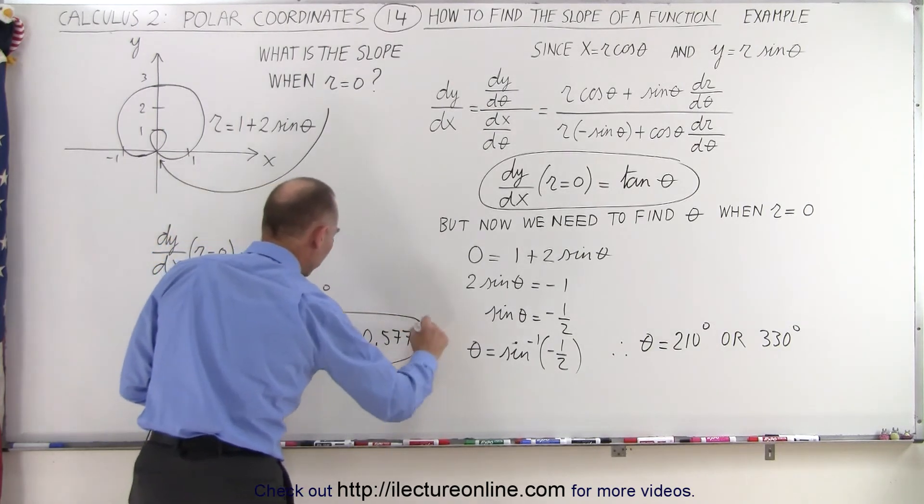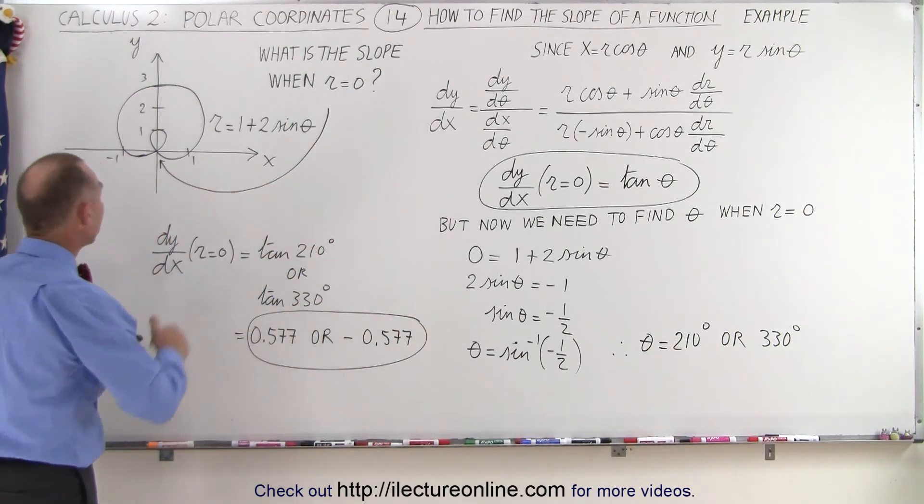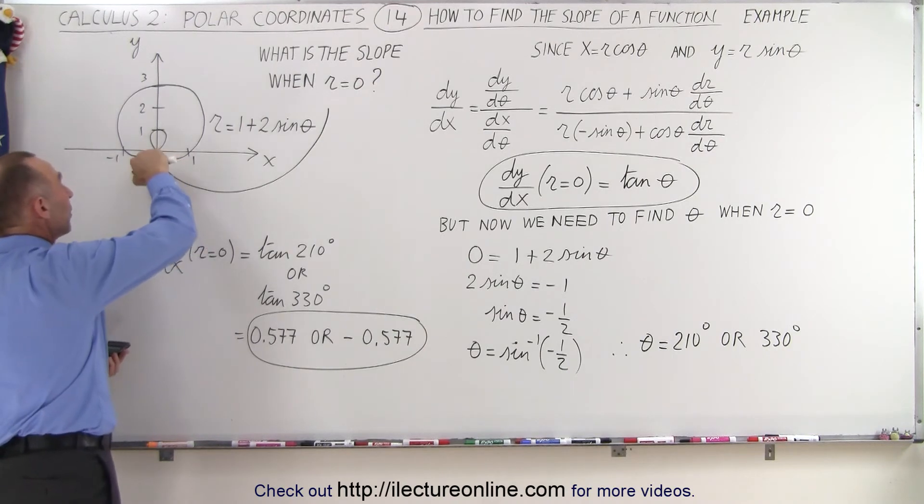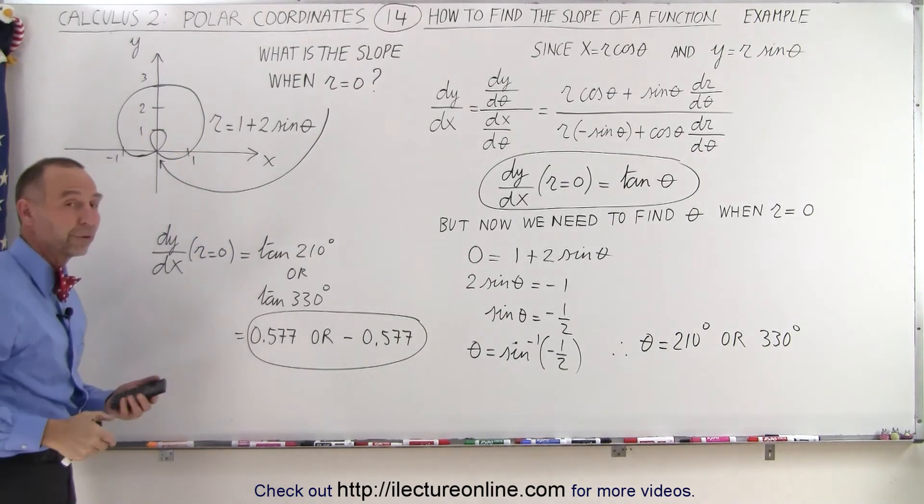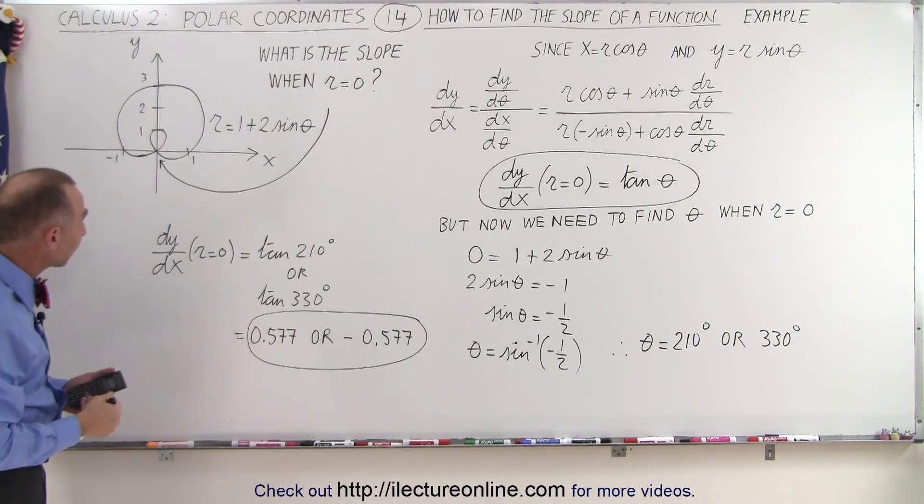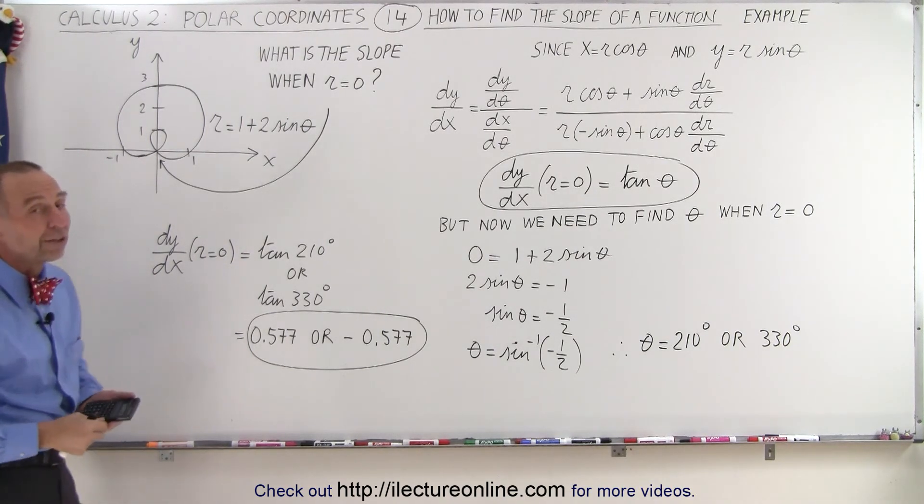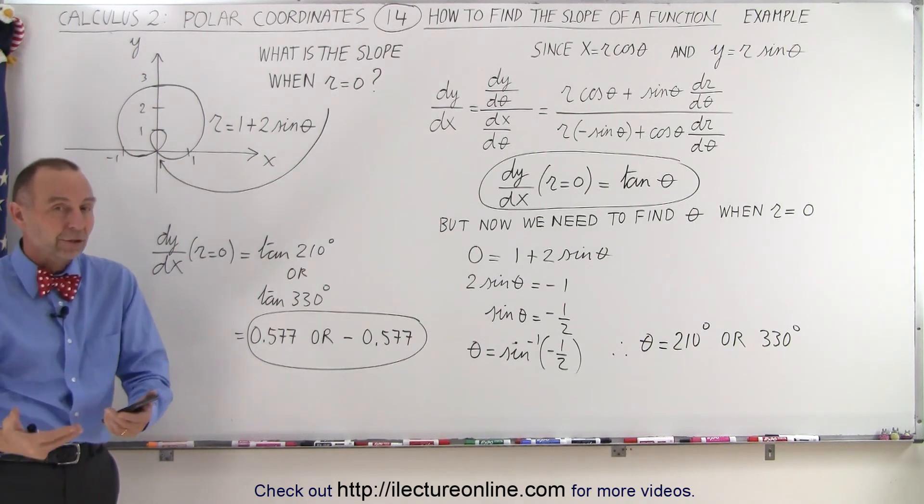So these are the two slopes that we'll find when r equals 0 at the origin right here. The positive slope comes from this portion of the curve. The negative slope comes from this portion of the curve. So it seems very likely that that's about right. And this is how we find the slope for this particular condition.